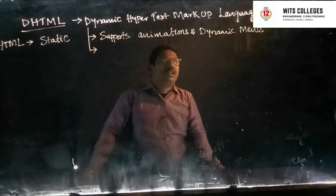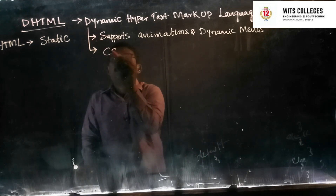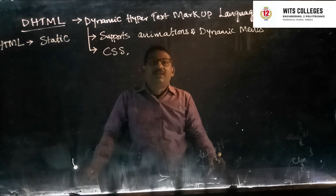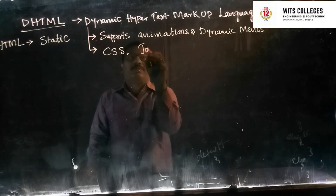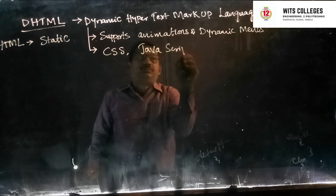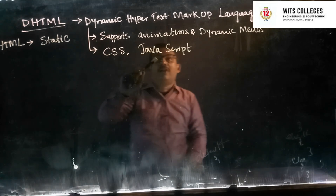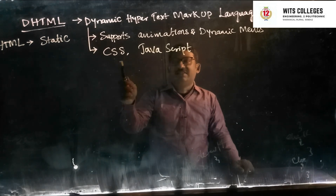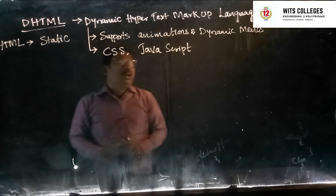DHTML associates with CSS — Cascading Style Sheets — and JavaScript. That means if an HTML file is associated with CSS and JavaScript, it will become a dynamic HTML page.